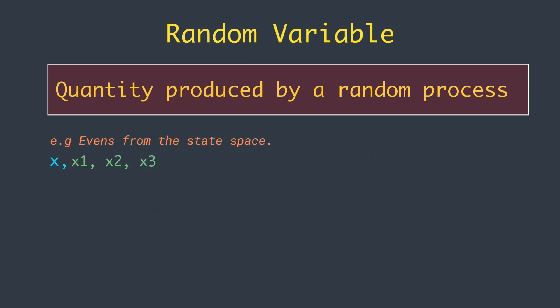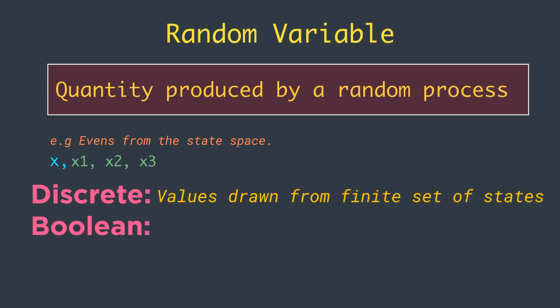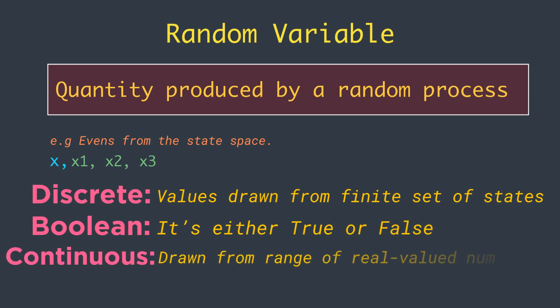There are three major types of random variables. The first one is discrete—values are drawn from a finite set of states. The second one is boolean—it's either true or false. And the last one is continuous—values are drawn from a range of real valued numerical values.